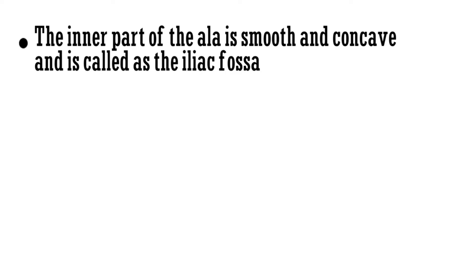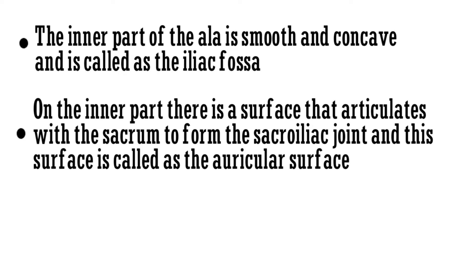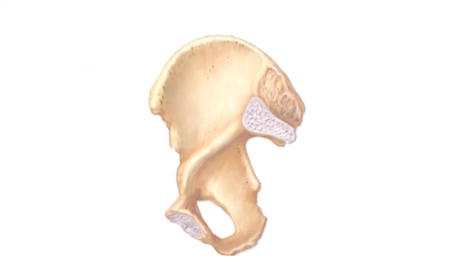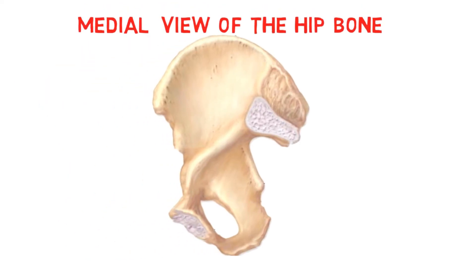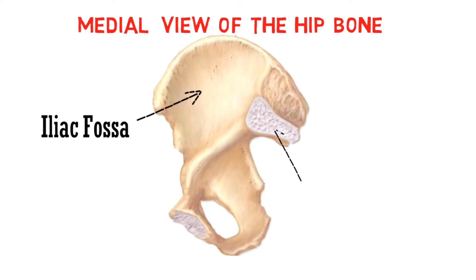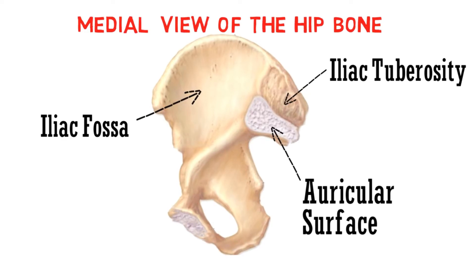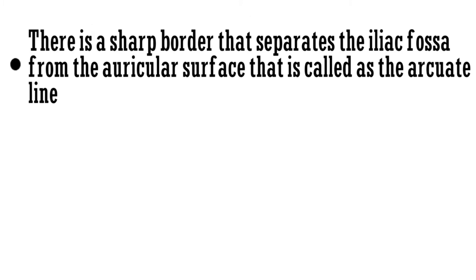On the inner part there is a surface that articulates with the sacrum to form the sacroiliac joint, and this surface is called the auricular surface. Above the auricular surface there is a tuberosity called the iliac tuberosity. This is the medial view of the bone. This concave part is the iliac fossa, this is the auricular surface that forms the sacroiliac joint, and above it is the iliac tuberosity.